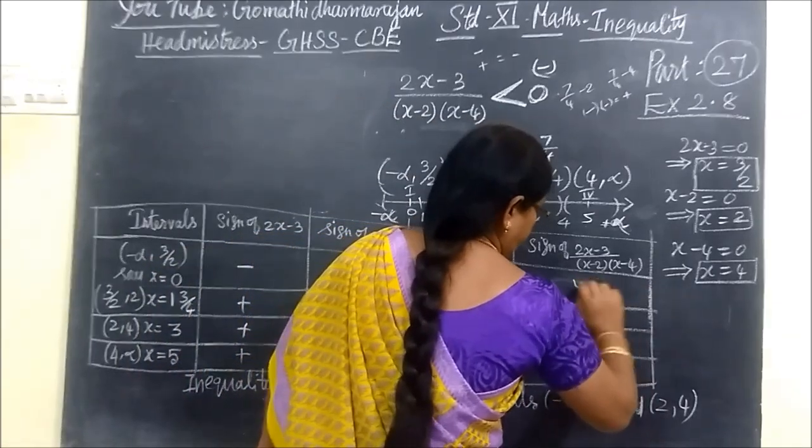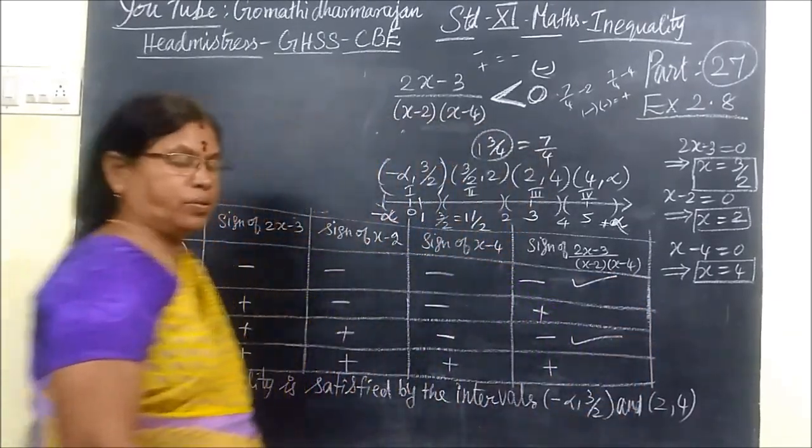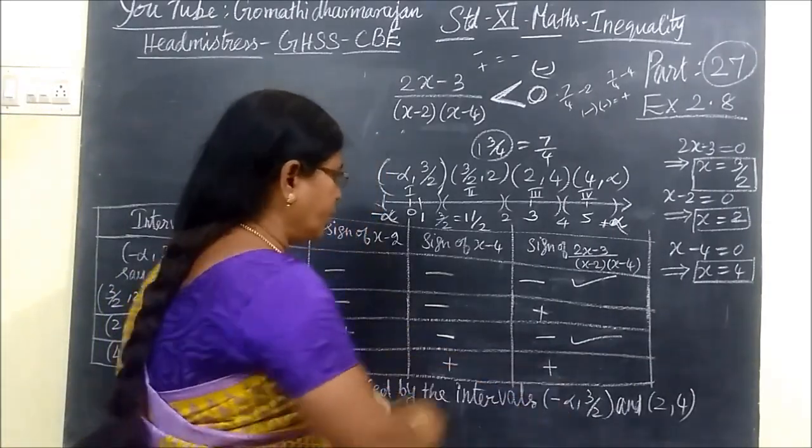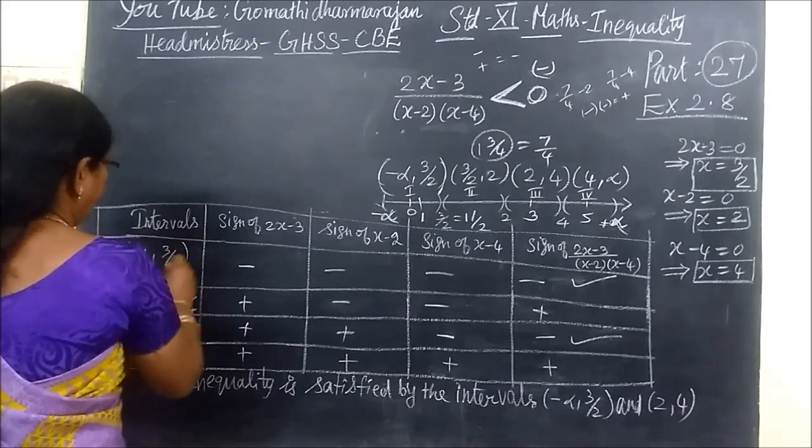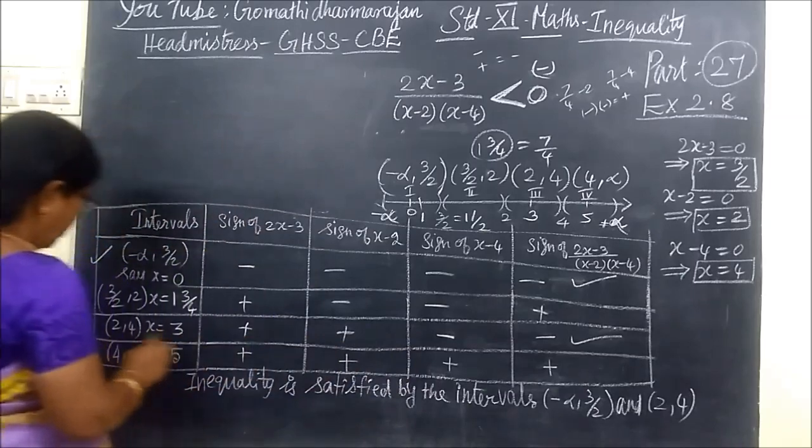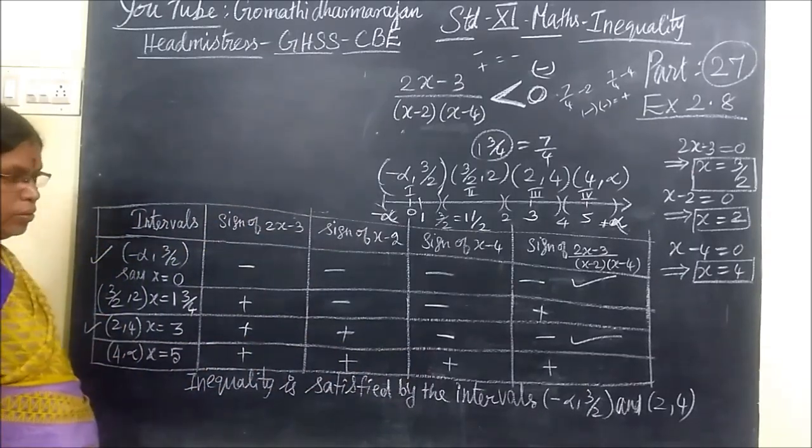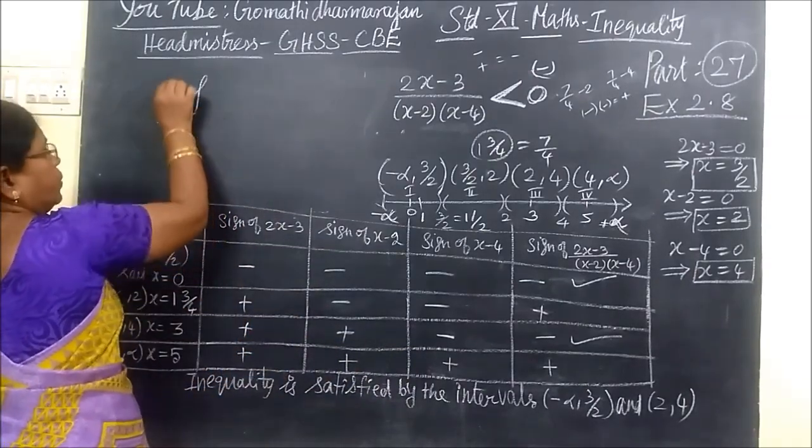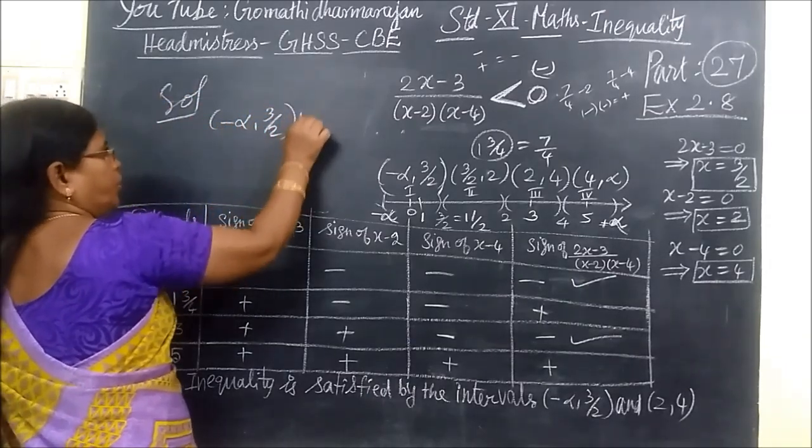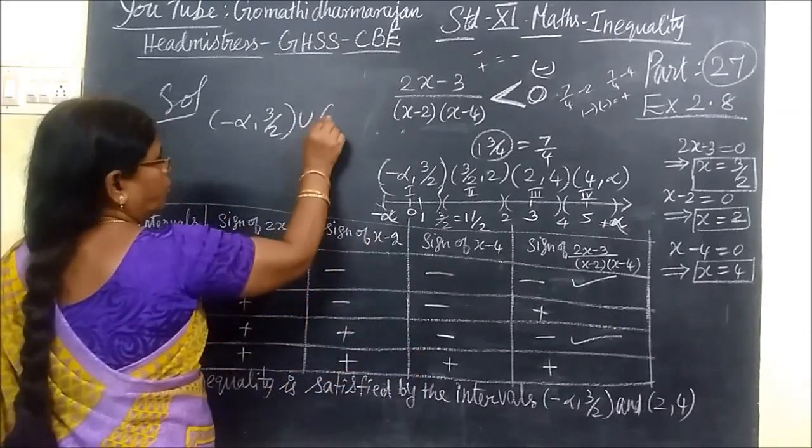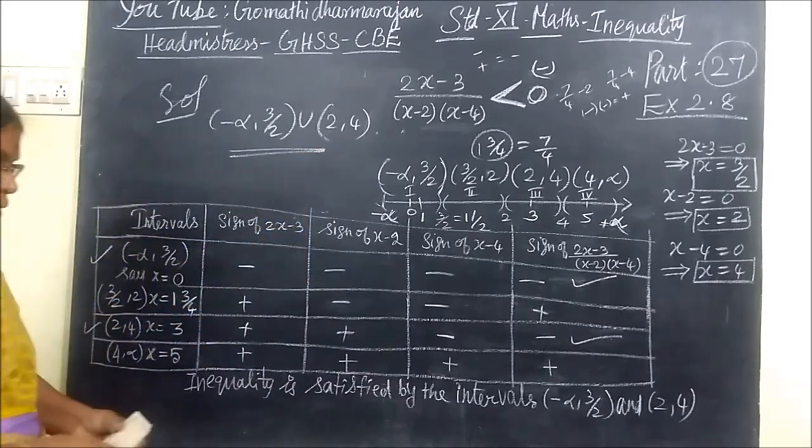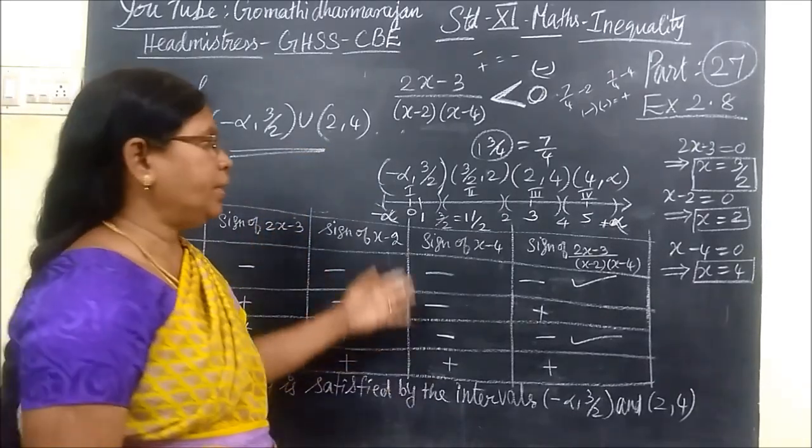This one is negative. This one. So inequality is satisfied by the intervals, this one and this one. Minus infinity to 3 by 2, then next one 2 to 4. So the solution is minus infinity to 3 by 2 union 2 to 4. This is the way of finding the intervals which satisfies the given inequality.